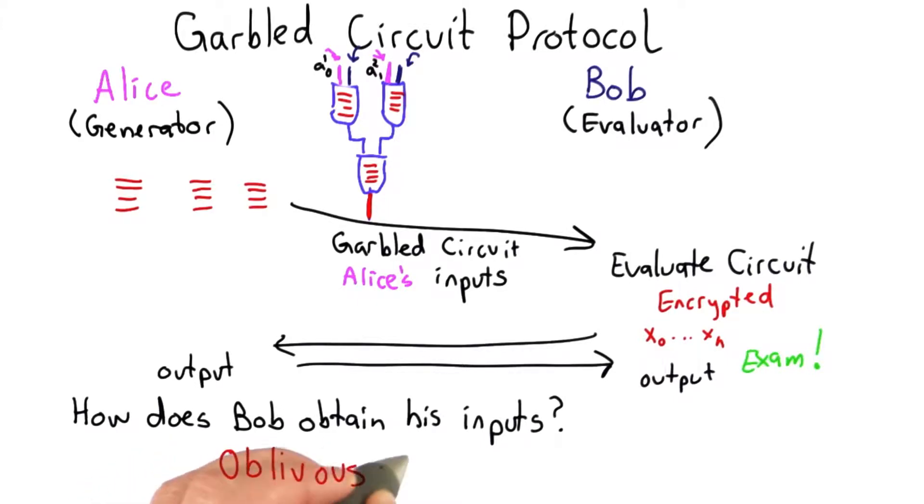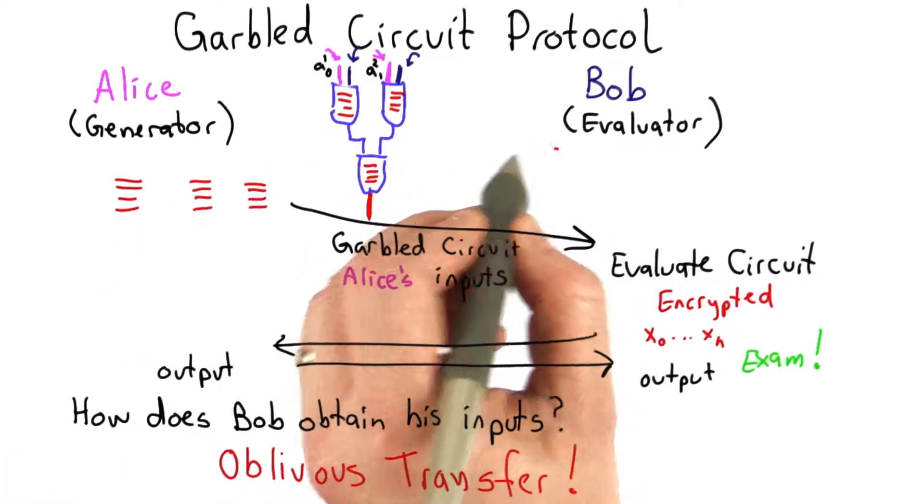So now we have the last thing that we needed to complete the garbled circuit protocol. The way Bob obtains his inputs is using oblivious transfer, and that could be done at this stage.